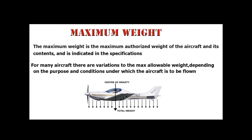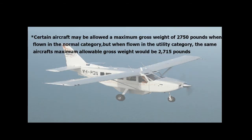Maximum Weight: The maximum weight is the maximum authorized weight of the aircraft and its contents, as indicated in the specifications. For many aircraft there are variations to the maximum allowable weight depending on the purpose and conditions under which the aircraft is to be flown. For example, a certain aircraft may be allowed a maximum gross weight of 2,750 lb when flown in the normal category, but only 2,715 lb when flown in the utility category.